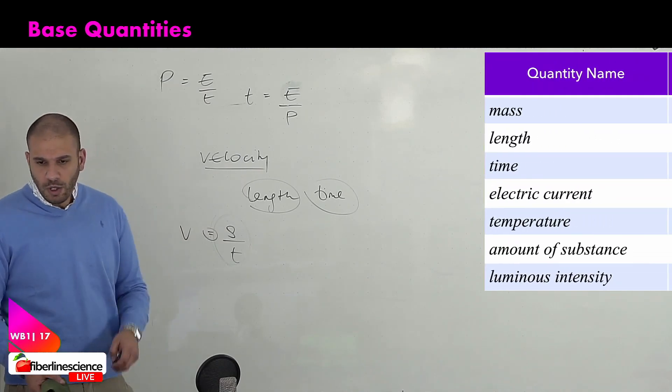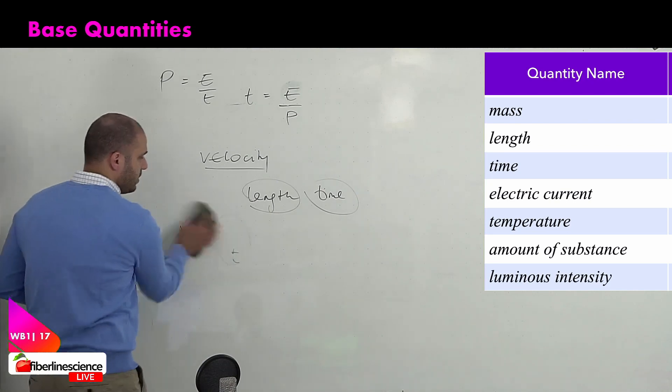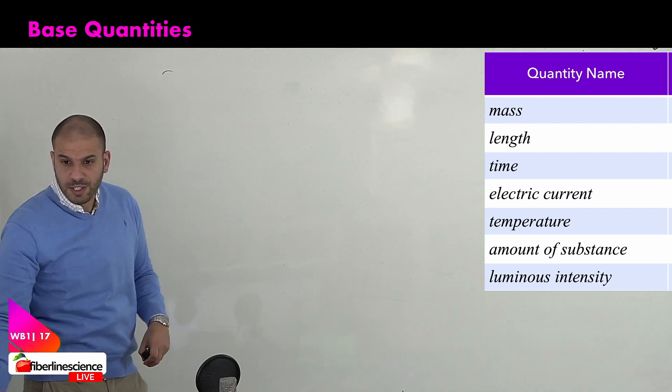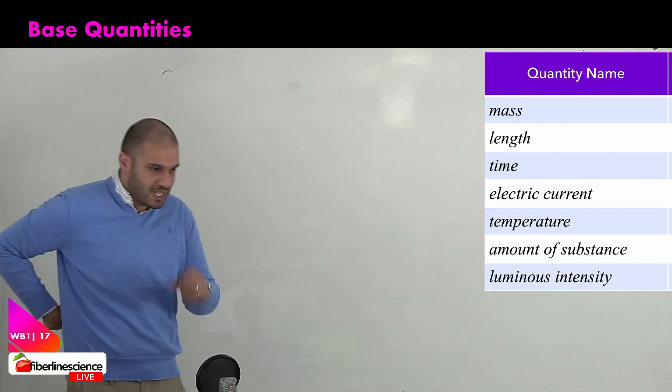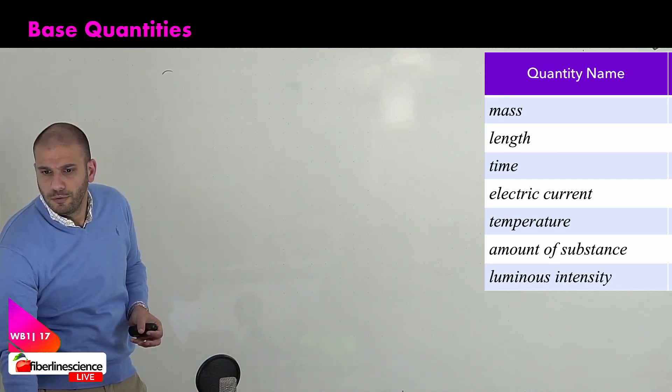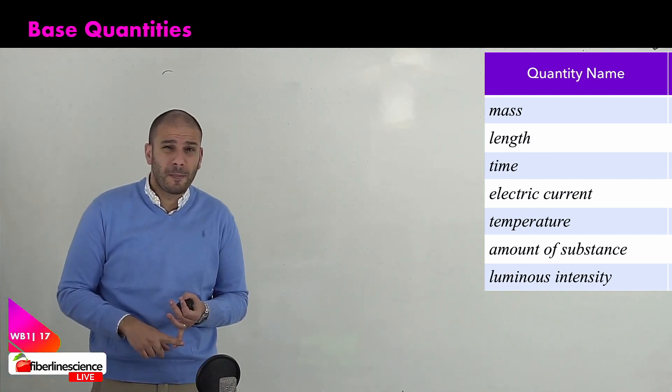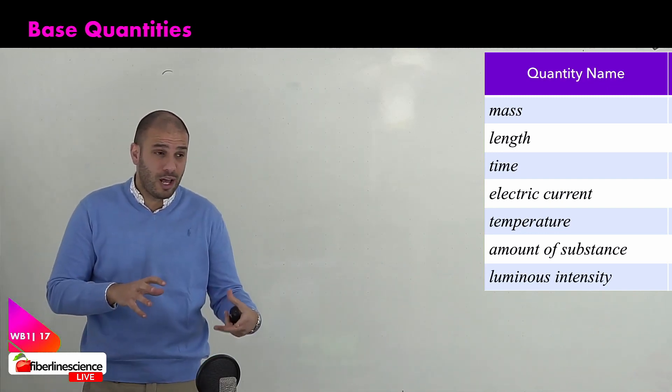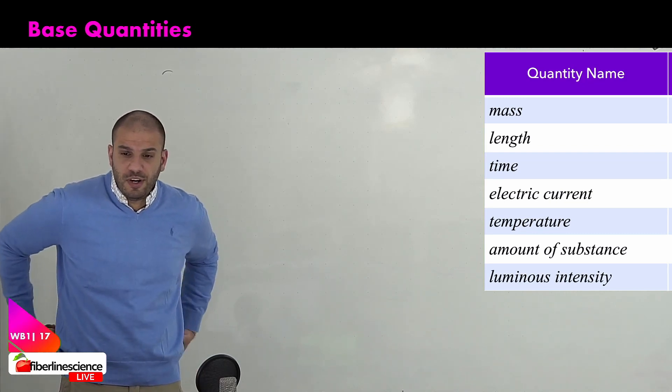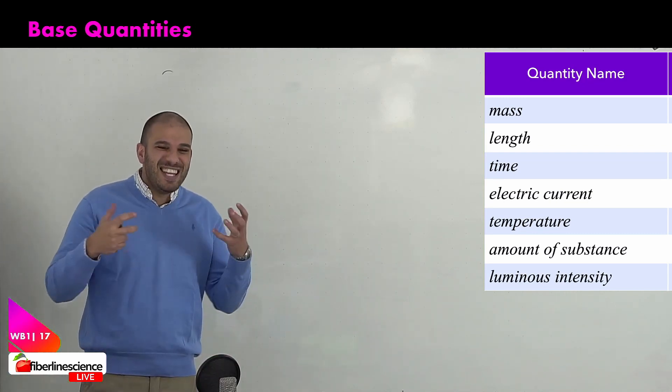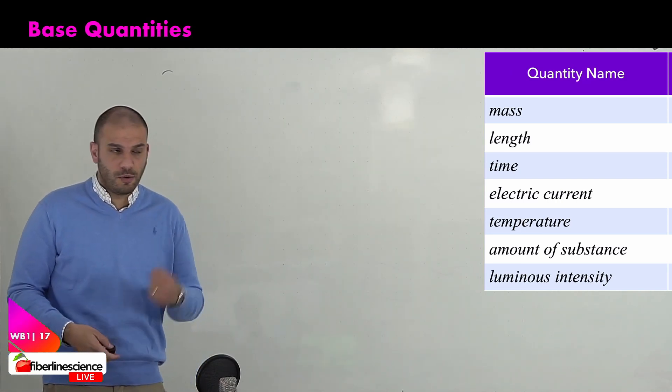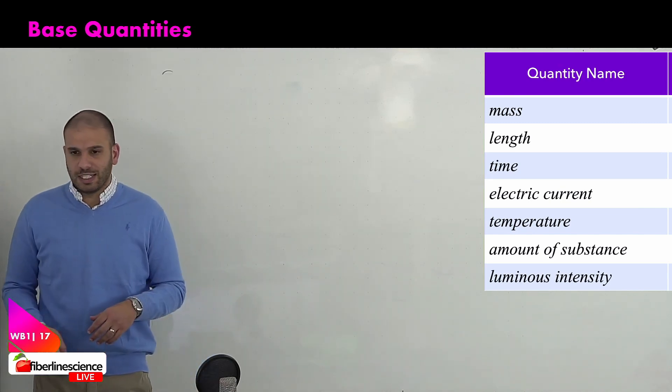So what are these seven base quantities? They're listed in the table. You need to know all of these. Mass, length, time, electric current, temperature, amount of substance, and luminous intensity. Maybe what's new to you is amount of substance - it's not mass, it's not an amount of atoms as such. It is measured in moles. We're going to see this very soon. And luminous intensity is the intensity of light being emitted from a source, from a light source for example. And that is measured in candelas.